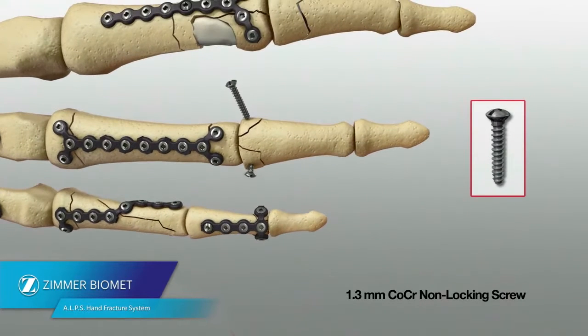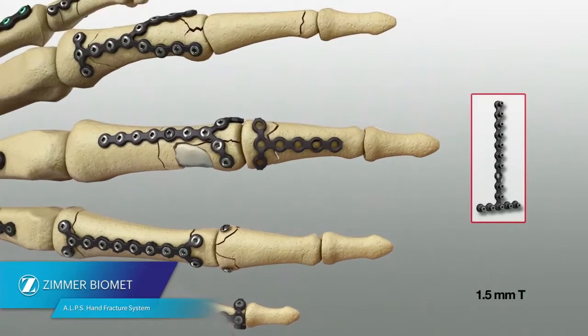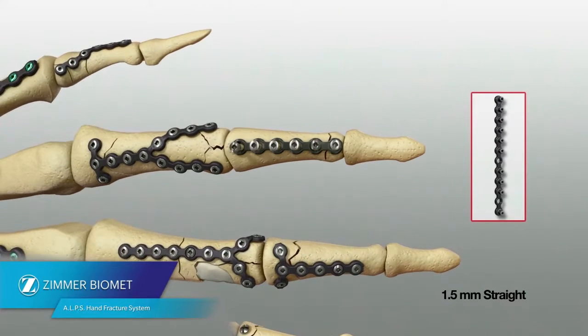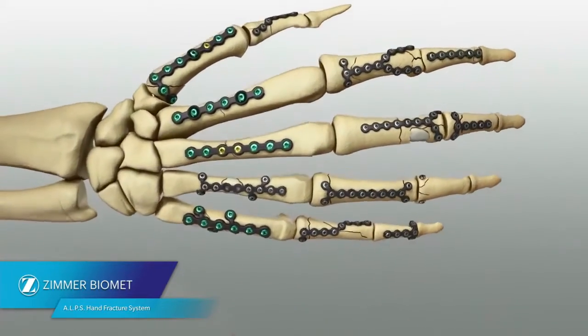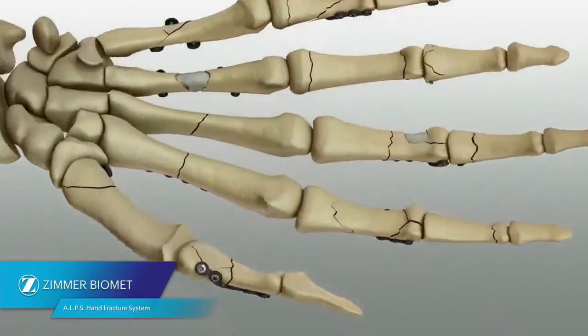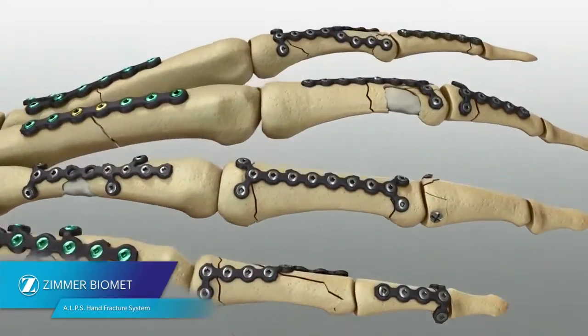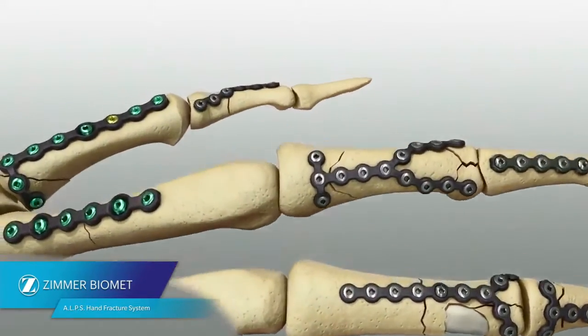Additionally, the ALPS Hand Fracture Plating System allows the use of locking, variable angle, and standard screws. This hybrid fixation concept allows the surgeon to stabilize the fracture either by the use of lag screw techniques through the plate or by compression plating techniques. Locking screws serve to provide stability to comminuted unstable metaphysial fractures or in osteopenic bone.